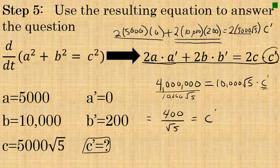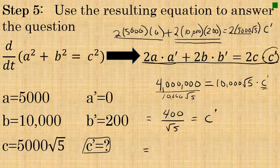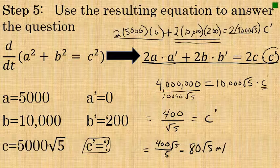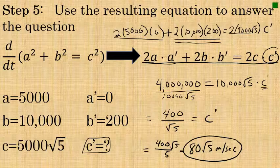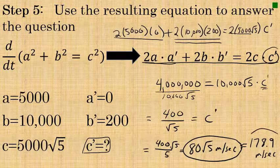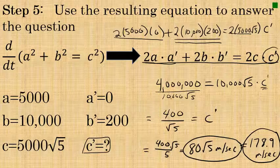The value of C prime is 400/√5. To express this in exact rationalized form, multiply numerator and denominator by √5: that gives 400√5/5, which simplifies to 80√5 meters per second. This is approximately equal to 178.9 meters per second. That is the exact rate at which the rocket is moving away from you at the instant described in the problem.